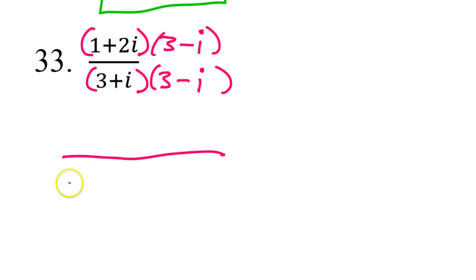When I FOIL this, I'm going to get 9. And I get negative 3i and then I get positive 3i. Those are going to cancel out. Then I have negative i squared. Be still. Up here, I've got 3. All right? And then let's see.